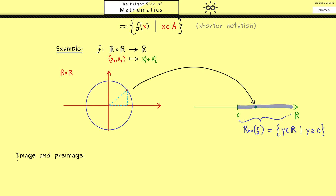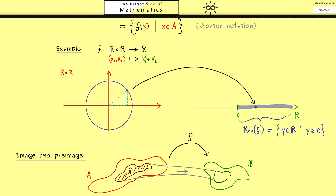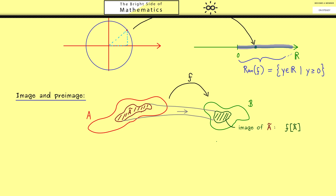Now we have to talk more about maps, in particular about images and pre-images. We have the same picture in mind: a map f goes from set A into set B, and the range of f consists of all points in B that we hit with f. We can ask a more detailed question: what are the points we hit with a given subset of A? Let's call this subset Ã. The subset we hit on the right hand side is what we call the image of Ã, and the notation used is f[Ã].